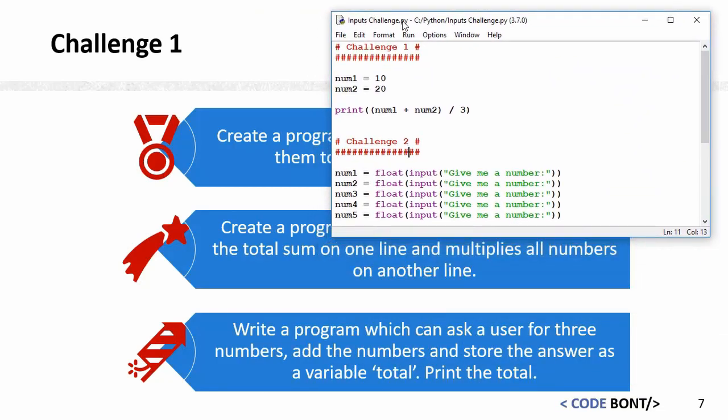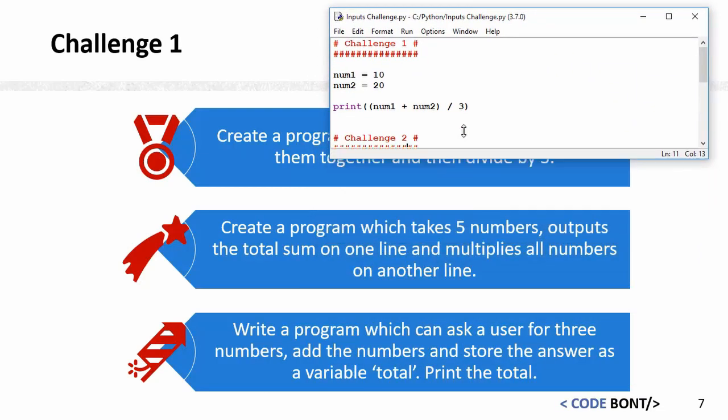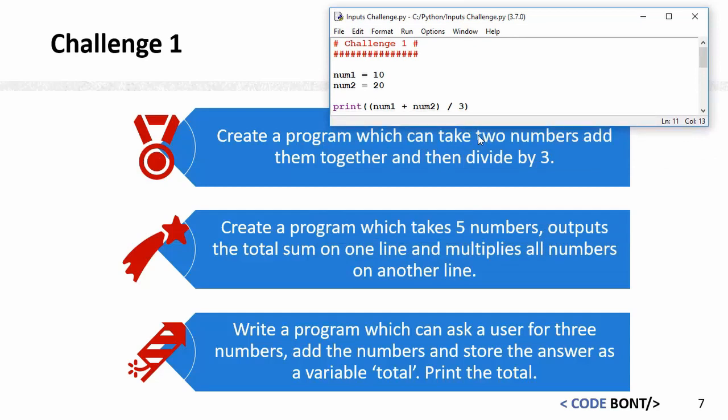The first one was to create a program which can take two numbers, add them together, and divide by three. A bit of a trick with this one—you should really put the first part in brackets, because otherwise with the rules of BIDMAS, it will do the division first. It'll divide number two by three and then add number one, whereas the question has to take two numbers, add them together, and then divide by three. That catches some people out, but Python does follow the rules of BIDMAS.